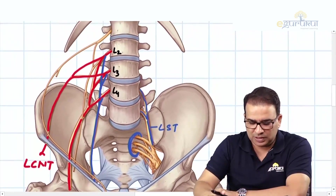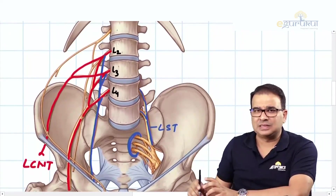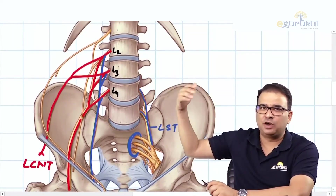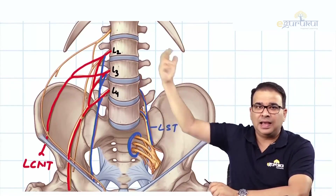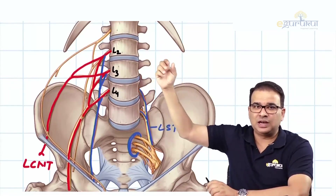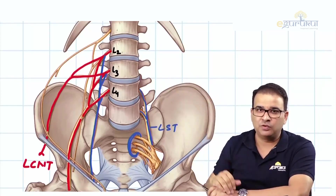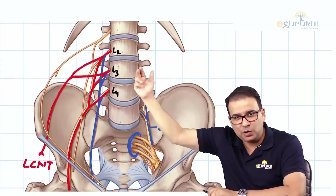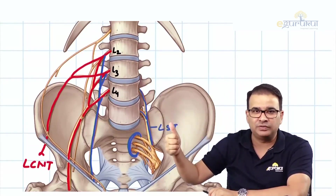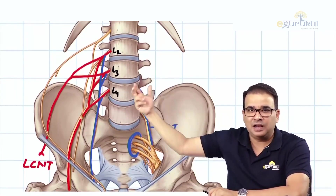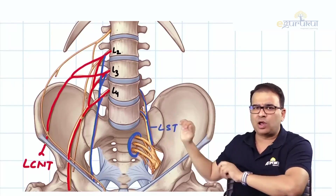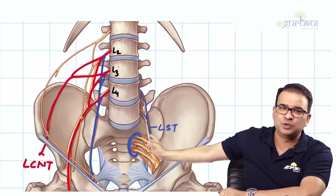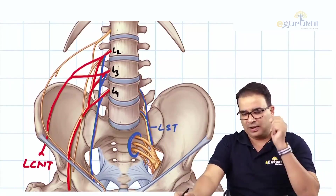Summary of major nerves from the lumbar plexus: L1 gives iliohypogastric and ilioinguinal; L1 and L2 give the genitofemoral nerve; L2 and L3 give the lateral cutaneous nerve of the thigh; L2, L3, L4 give both the femoral and obturator nerve; L3 and L4 give the accessory obturator nerve; and the lumbosacral trunk comes from L4 and L5.